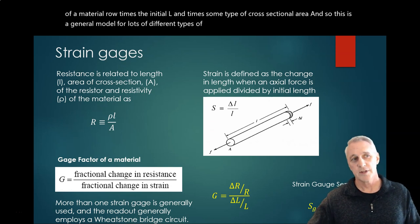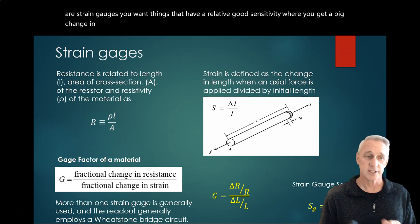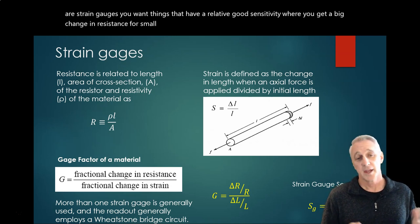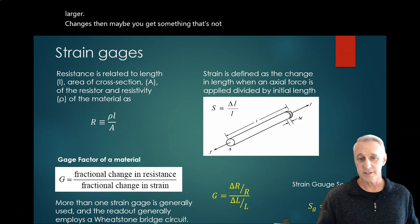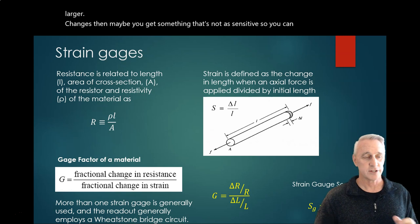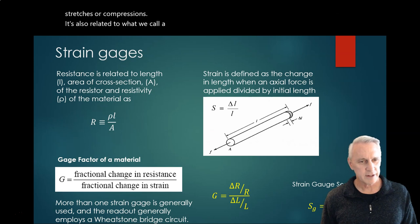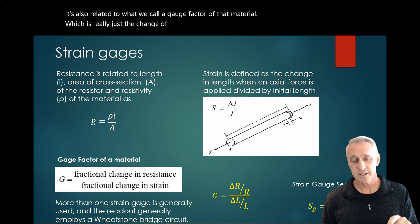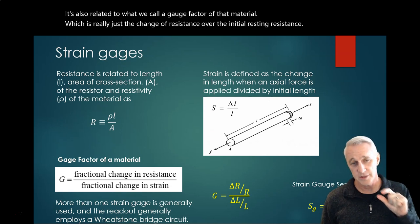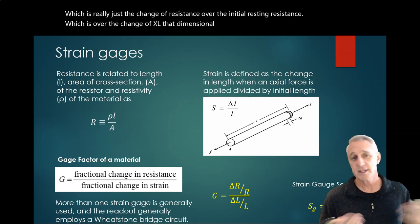And so when you get things like better strain gauges, you want things that have a relative good sensitivity where you get a big change in resistance for small changes of L. Unless you're trying to figure out larger changes, then maybe you get something that's not as sensitive so you can detect larger stretches or compressions. It's also related to what we call a gauge factor of that material, which is really just the change of resistance over the initial resting resistance, which is over the change of L (that dimensional change) divided by the initial L.